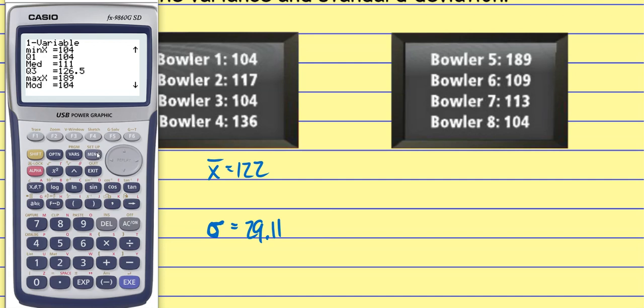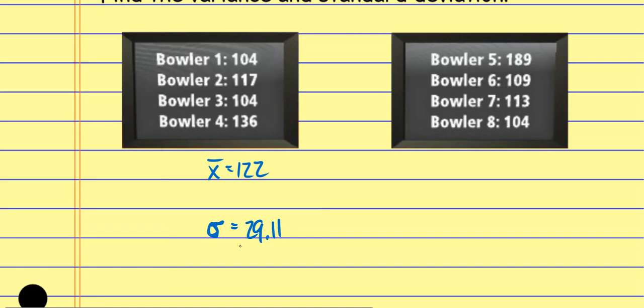So now finding the variance, just a matter of going back to this guy and saying, hey, let's take that standard deviation, the 29.11. And I actually wrote down the rest of the decimals here, the 062643. And I'm just going to square that. So I square that thing. And it gives me 847.43. And so there's our mean, there's our variance, there's our standard deviation for this one.